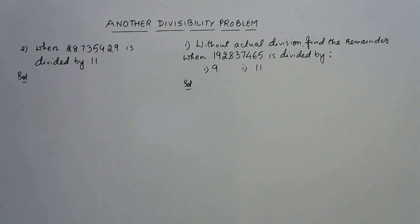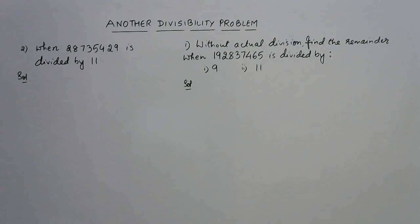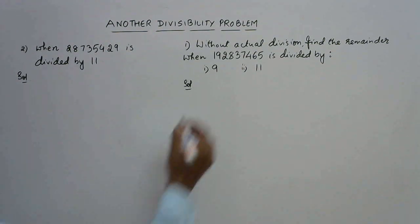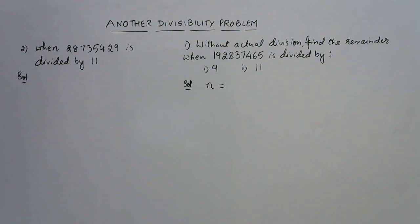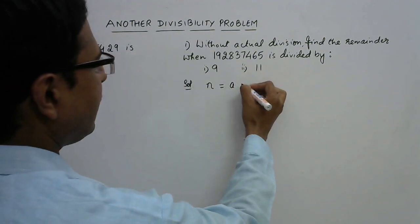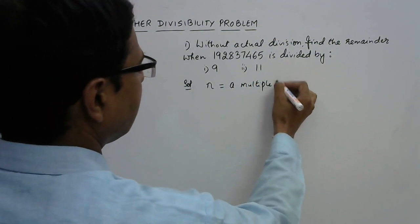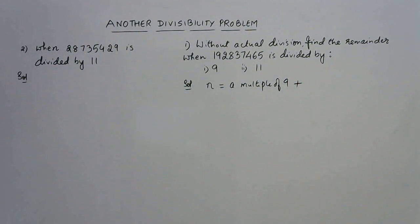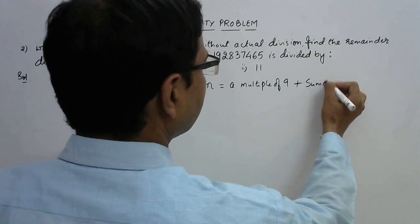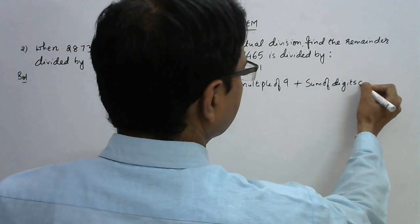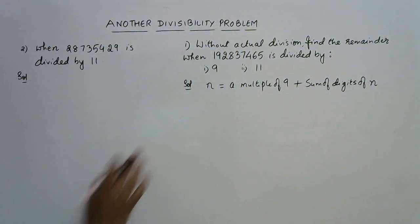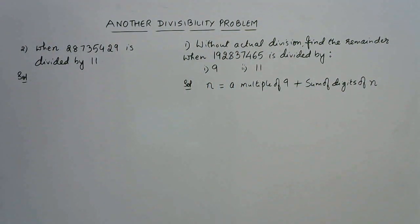In the first part we are given the divisor as 9. What is the divisibility rule of 9? We know that a number is divisible by 9 if the sum of digits is divisible by 9. So, whenever this number n can be represented as a multiple of 9 plus the sum of digits of n, we need to find this expression.